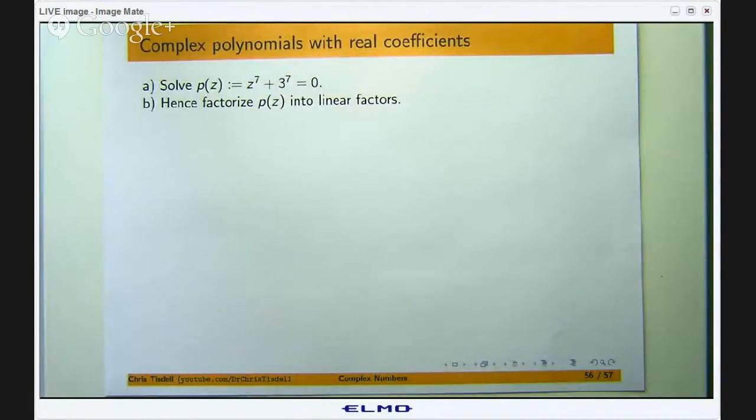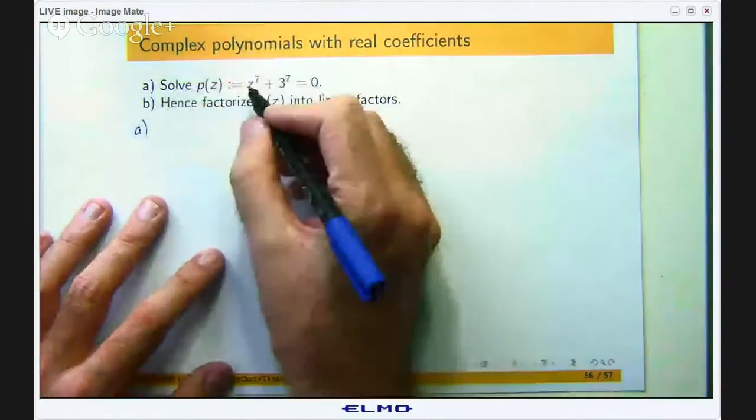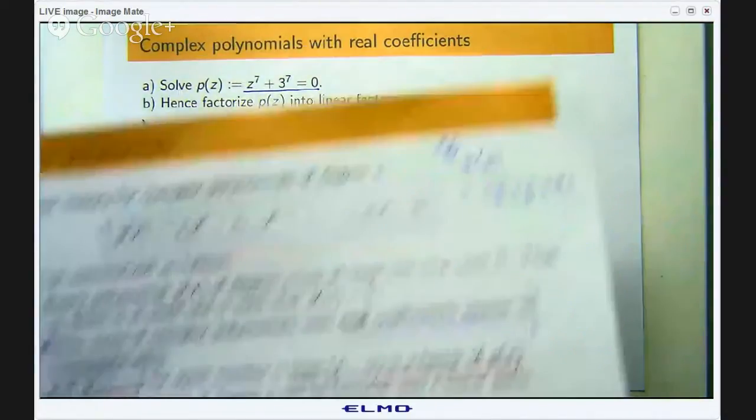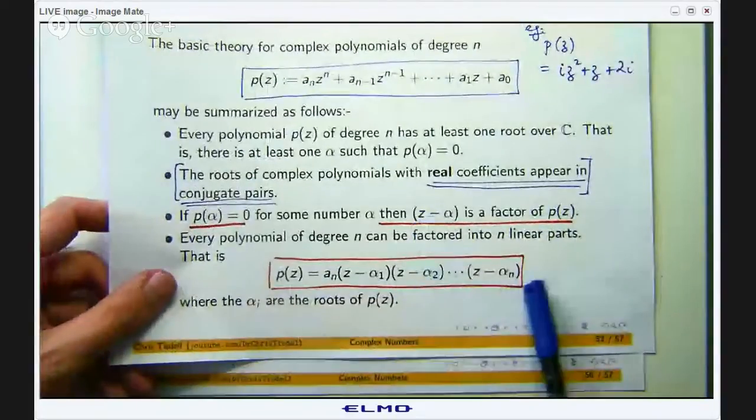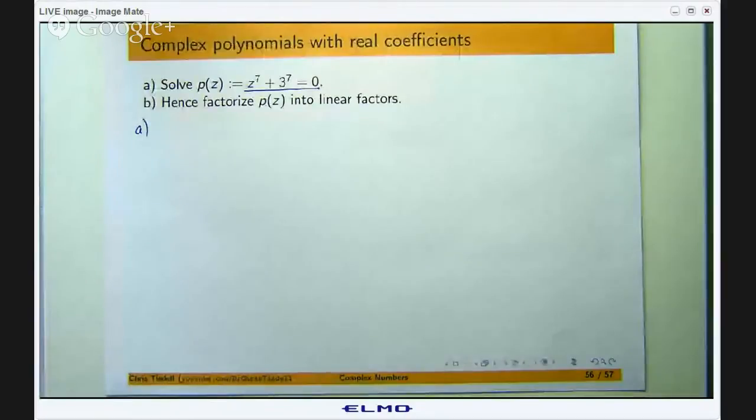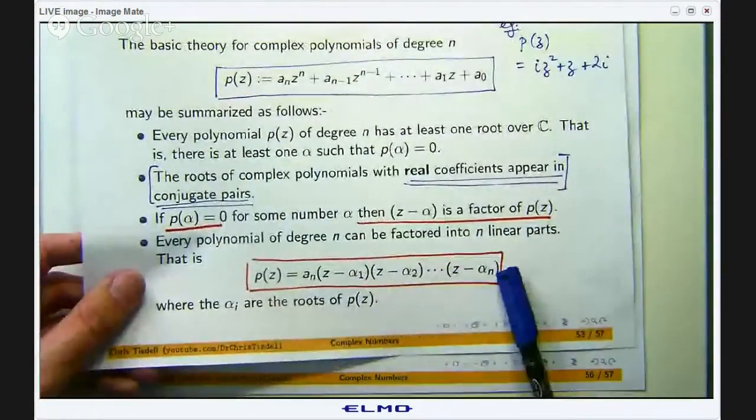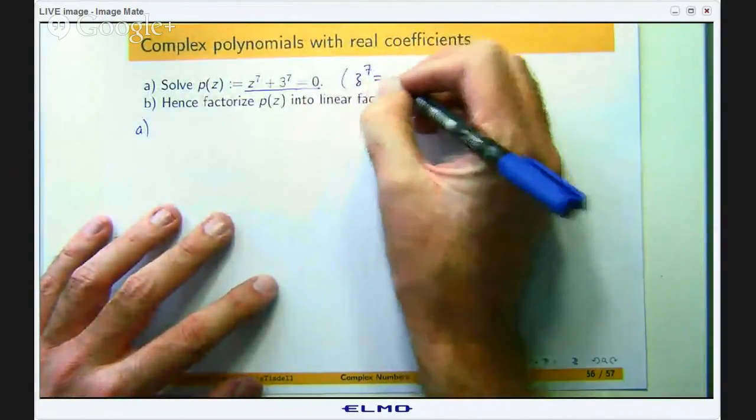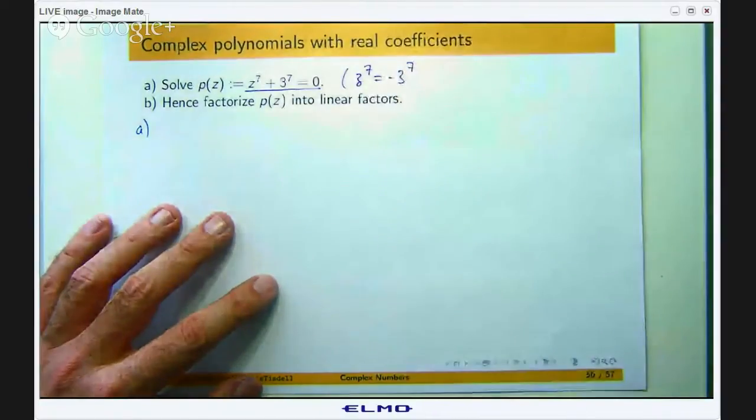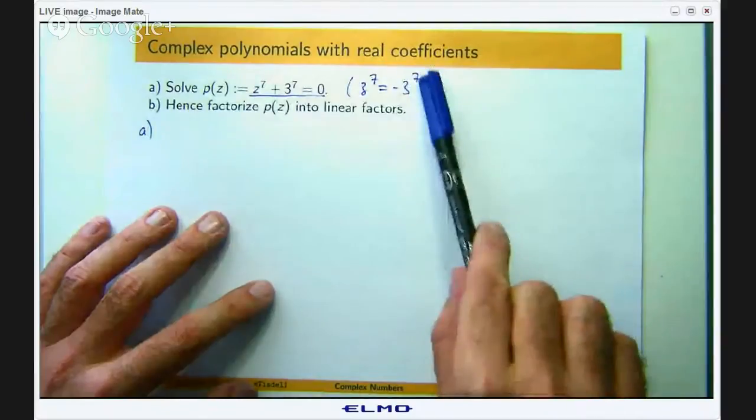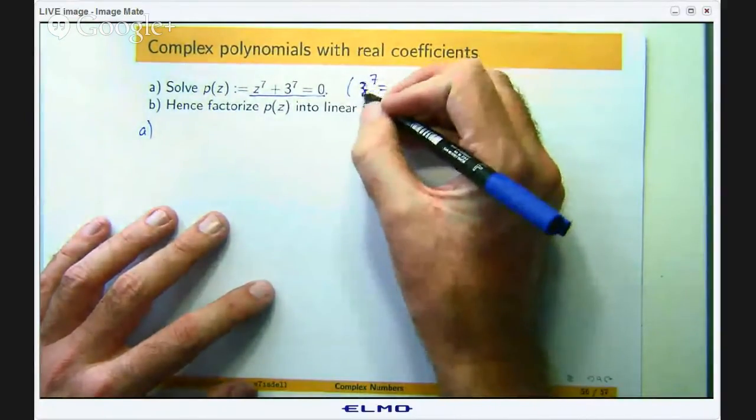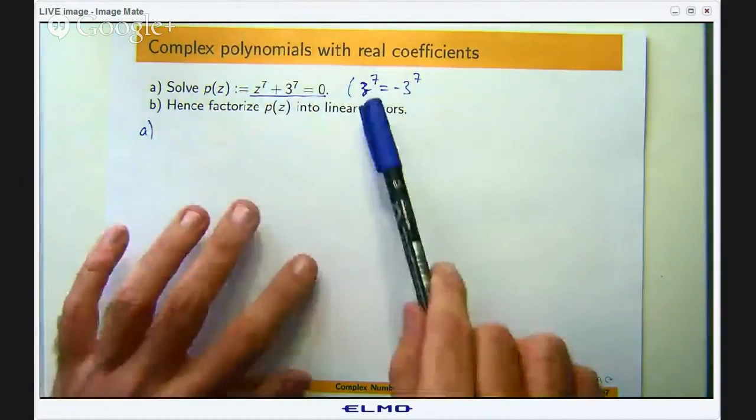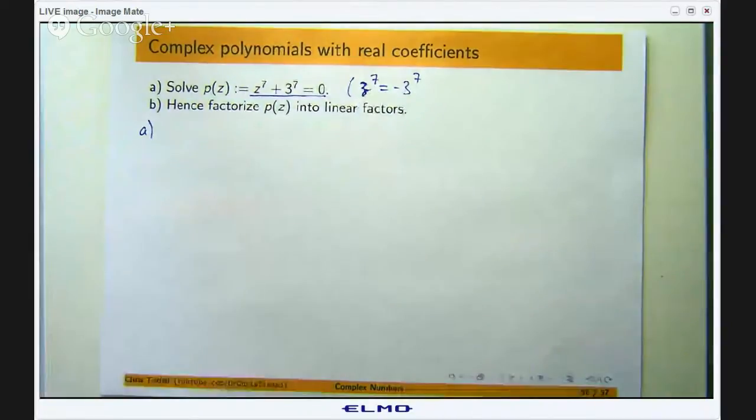So we have the following. Let us consider this equation. We will solve it and then by the factor theorem I can write p as this sort of combination of linear factors where the αi's are the roots. So what we are going to do is think of this slightly rearranged equation and I am going to write the right hand side in a polar exponential form.